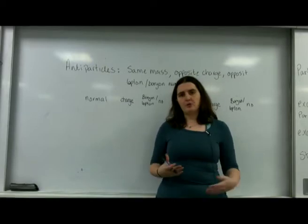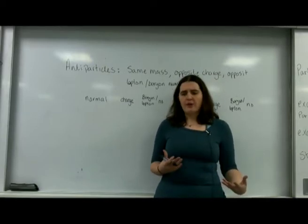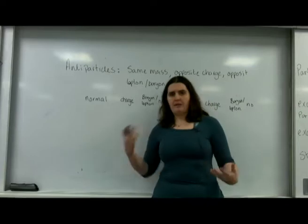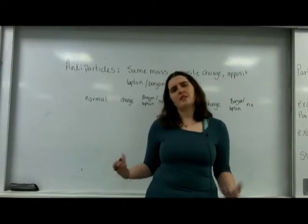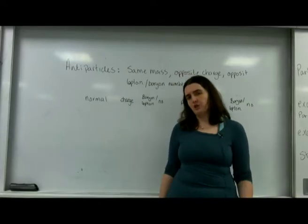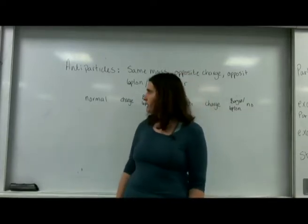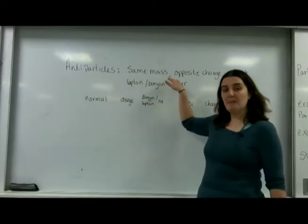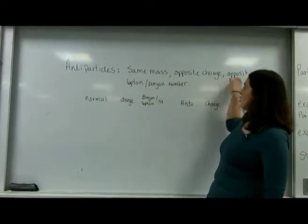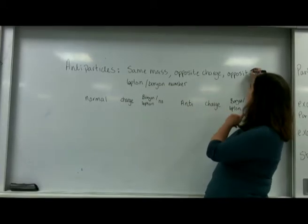When we look at particles like protons, we can have an antiproton, but the charge has to be opposite to be able to conserve charge in the universe. So it's really important that you realize antiparticles have the same mass but opposite charge and opposite lepton and baryon number.